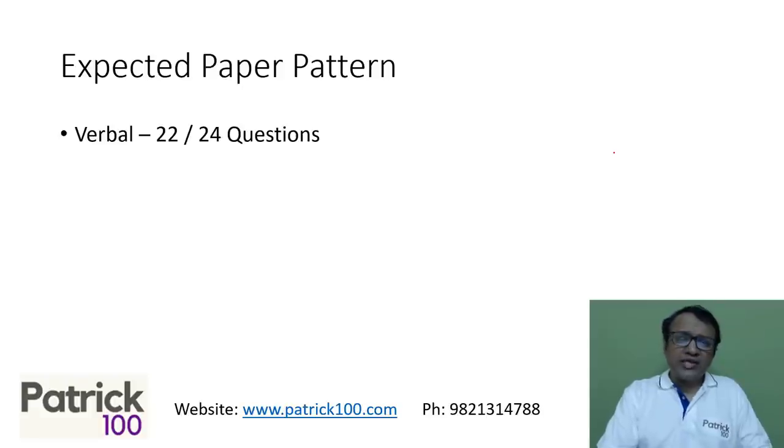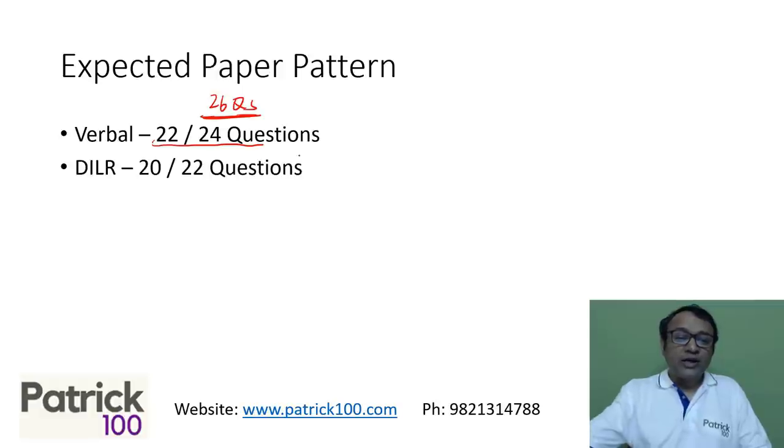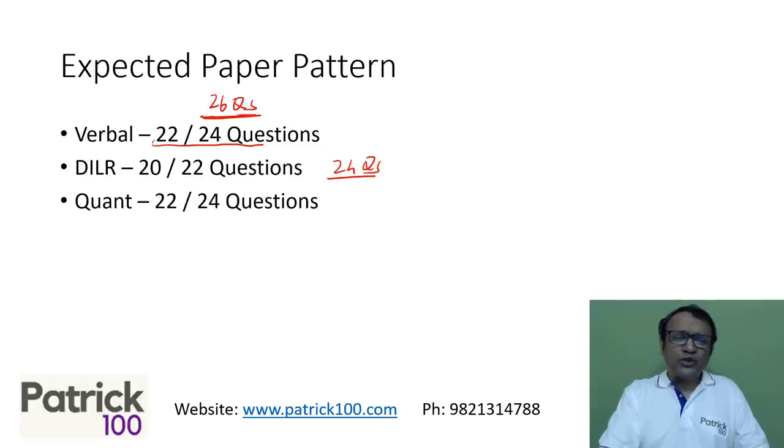So what is the expected paper pattern? I would say verbal would be 20 to 24 questions. Initially, it was 26 questions. So now it will become 22 to 24 questions. DILR which was 24 questions will become 20 to 22 questions. So reduction of two to four questions per section.